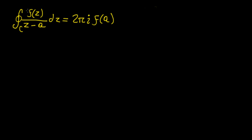This is a really interesting formula because if we have any function that possesses a singularity at the point z = a, we can evaluate the integral simply by calculating the value of the function at that point a and then multiplying it by the factor 2πi. If the function is non-analytic at that point, we can calculate it using this. Otherwise, if the function is analytic everywhere on C, the result is 0.